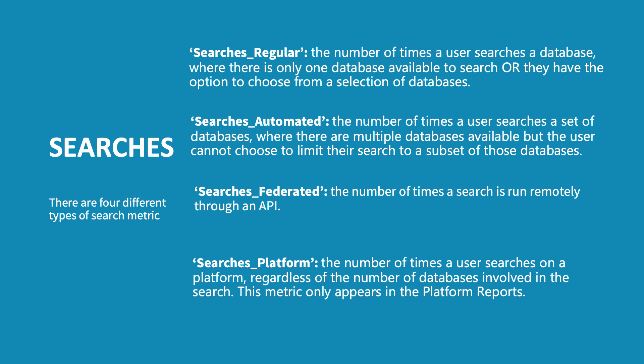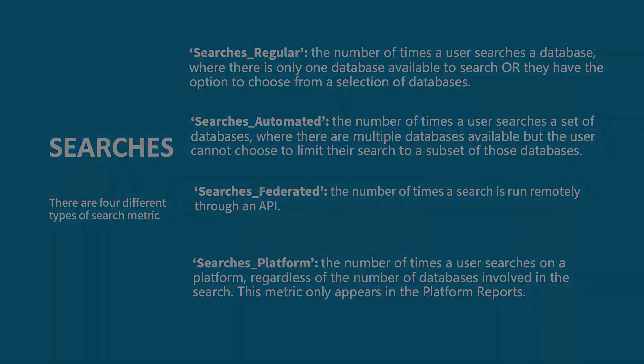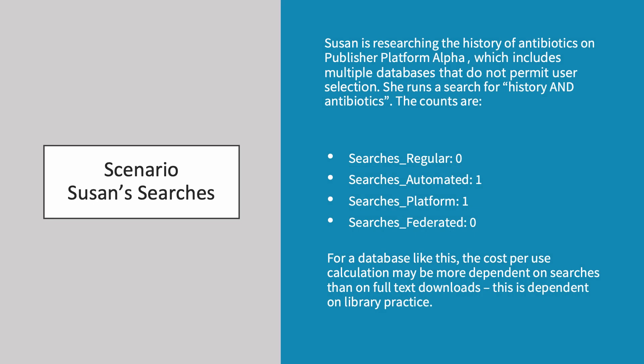This metric appears only in platform reports. Susan continues her research on the history of antibiotics on publisher platform Alpha, which includes multiple databases that do not permit user selection. She runs a search for history and antibiotics. The counts are 0 searches regular, 1 searches automated, 1 searches platform and 0 searches federated. For a database like this, the cost per use calculation may be more dependent on searches than on full text downloads, but this is dependent on library practice.